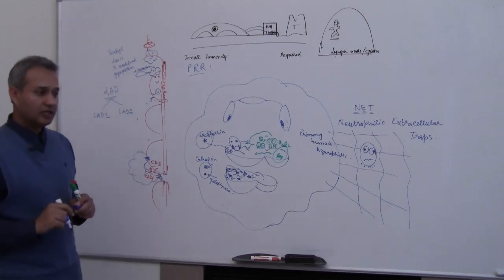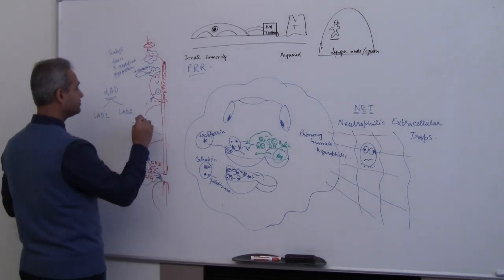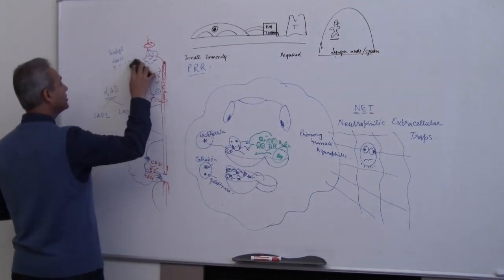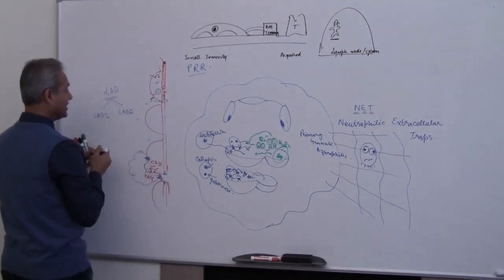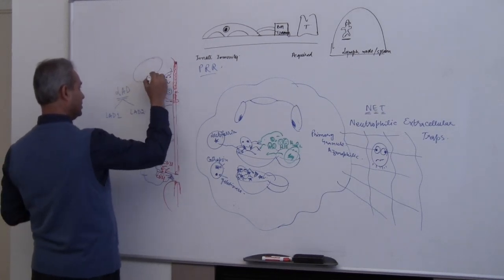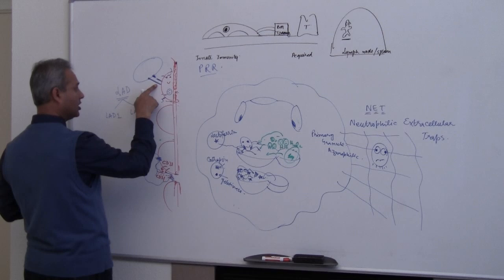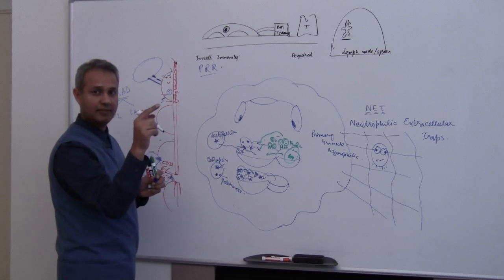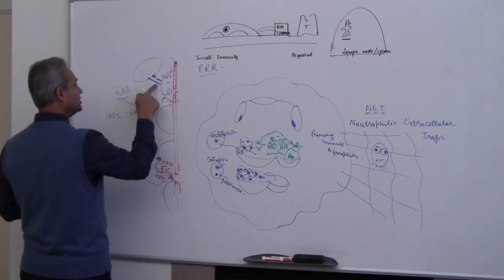Leukocyte adhesion defect 1 involves integrins. The integrin binds with the leukocyte. These integrins - ICAM1 or VCAM1 - where ICAM1 works with LFA or MAC and VCAM1 binds with the very late antigen or VLA4.